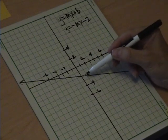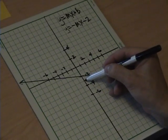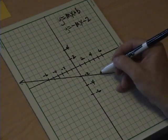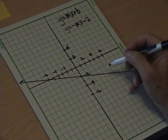From this point, 0, negative 2, if we go down one unit to here, to negative 3, and to the right, let's see, 1, 2, 3 units, we hit another point on the line.